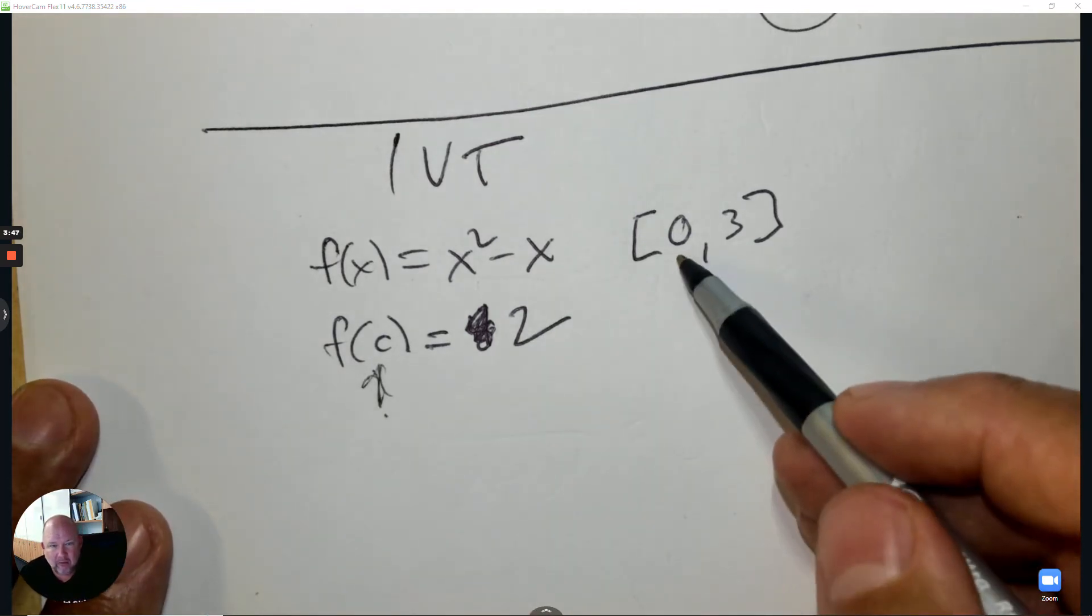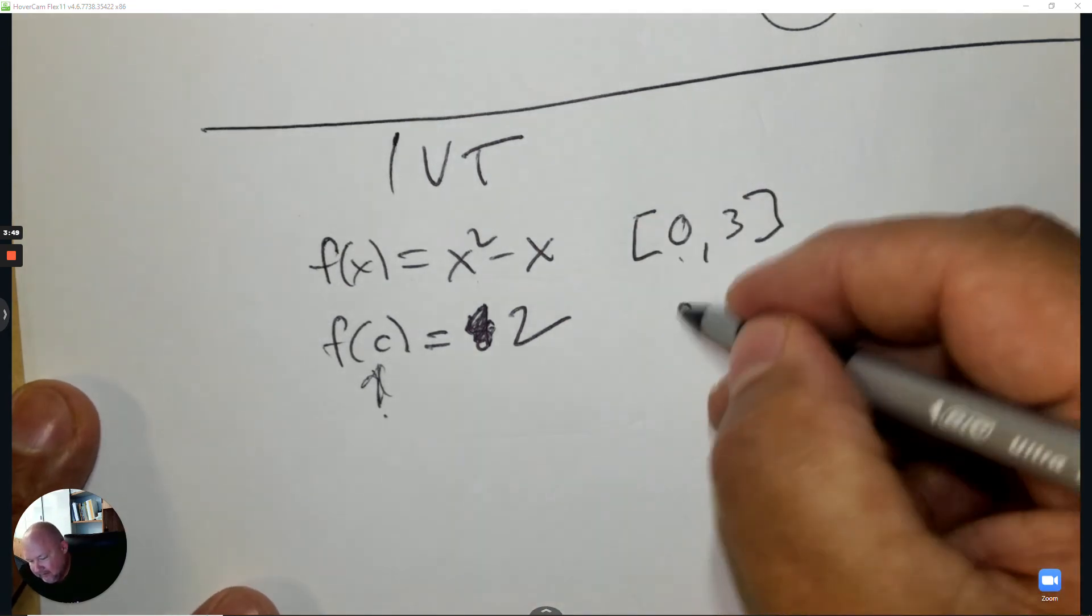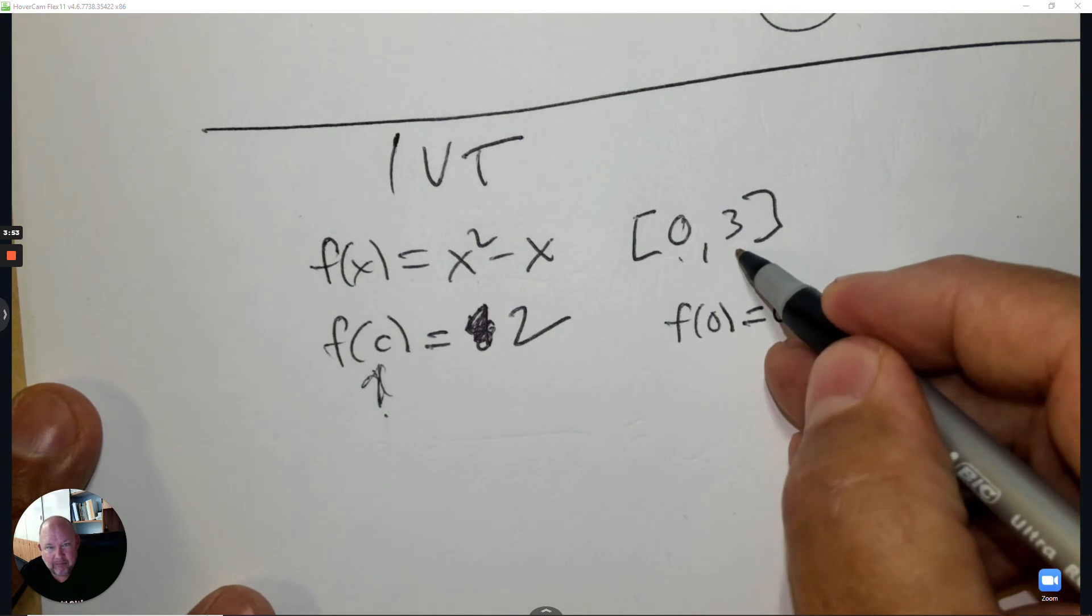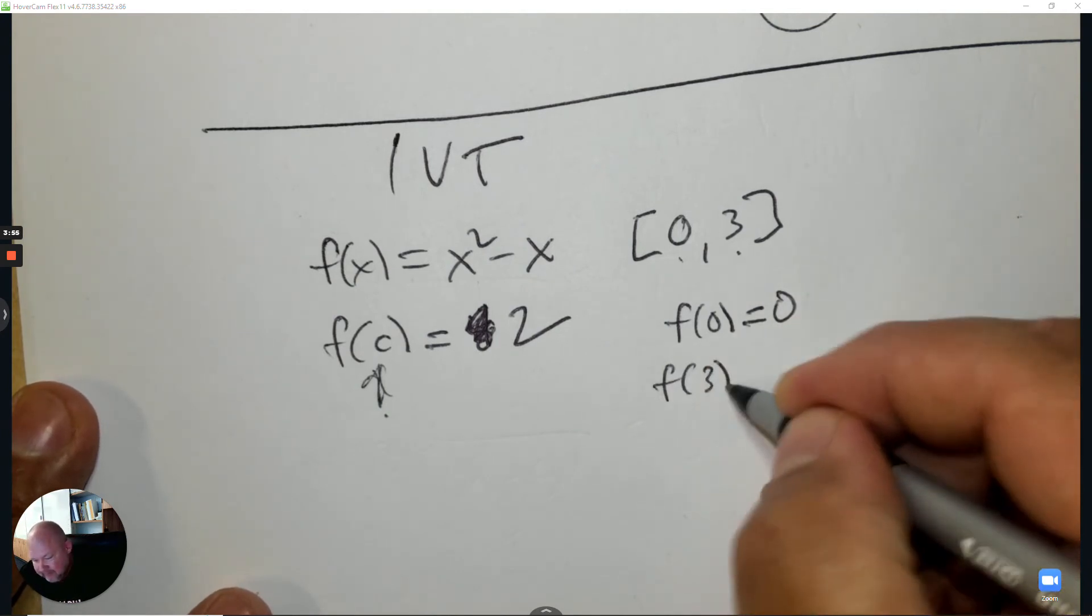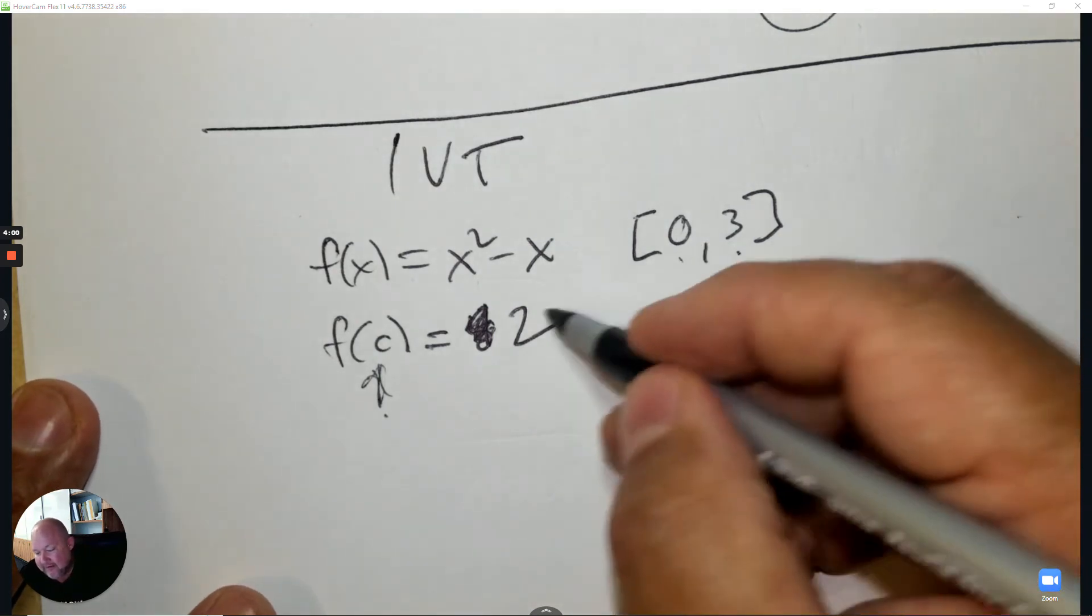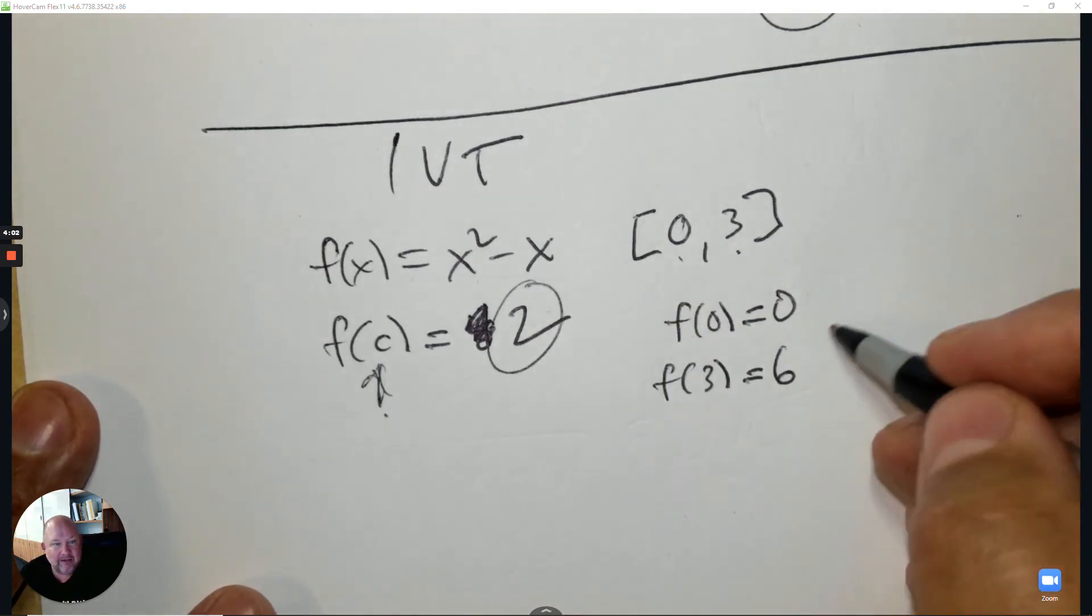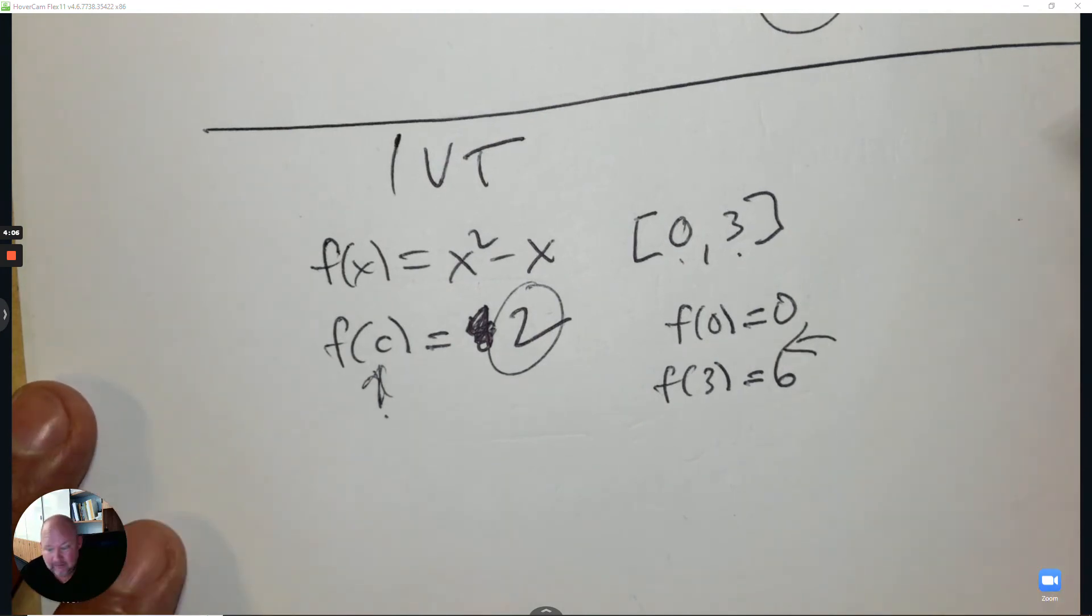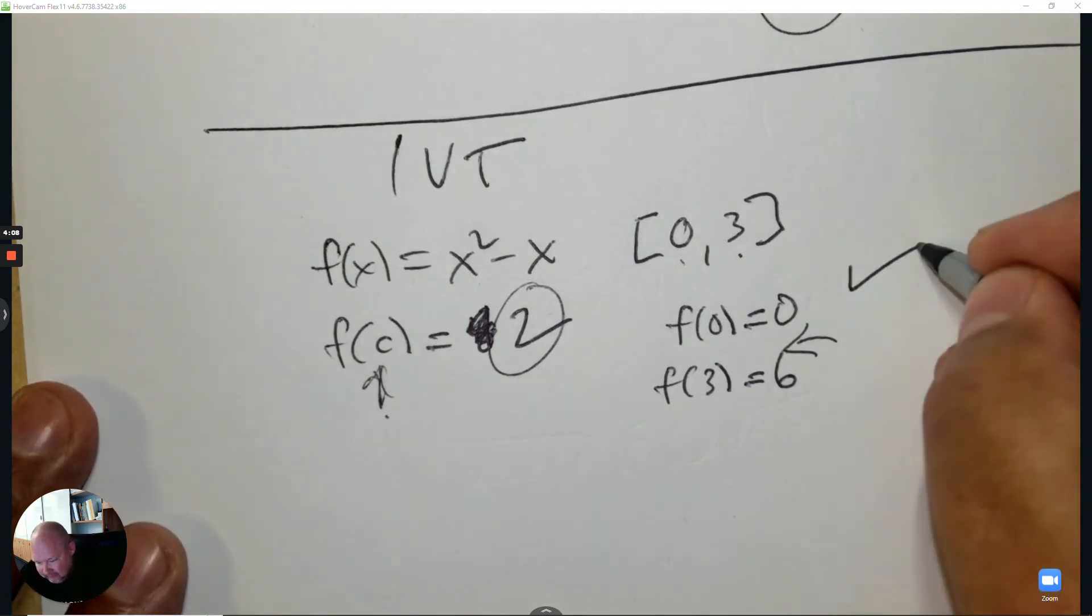Does a c value exist that can give you the answer? Step 1: plug in 0 and find the first y value. Then plug in 3 and find the second y value. That's 9 minus 3, which is 6. Is this number in between? If it is, then it exists. That's what it means for a continuous function. Yes, it exists.